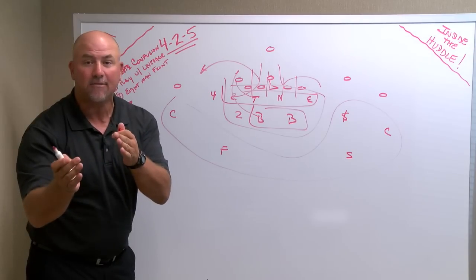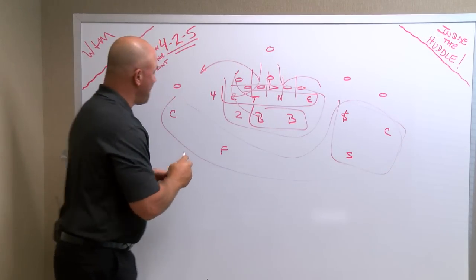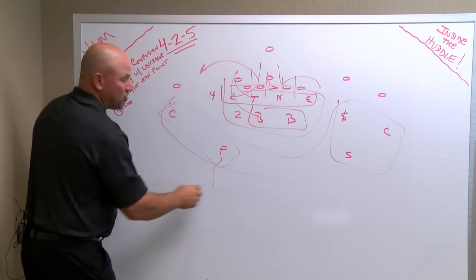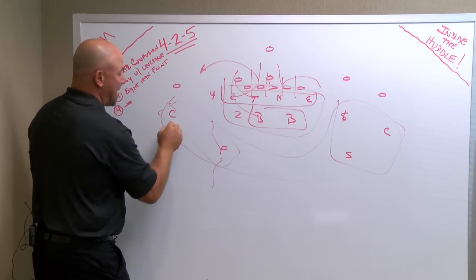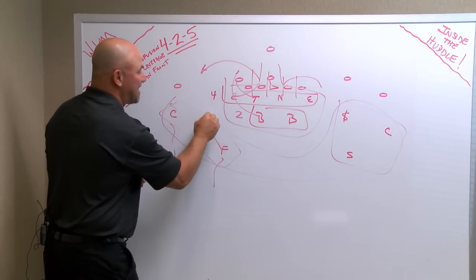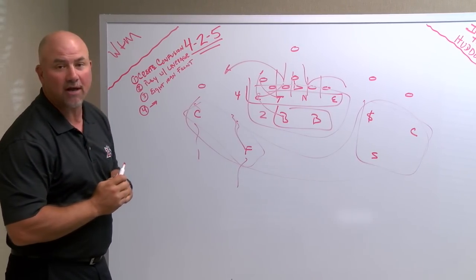And those back five can play independently of each other. These three right here over two. The backside free safety and corner can play two deep coverage. They can play two sky coverage. They can do a lot of different things and you can get that free safety into the box. So you create a lot of confusion up front. You play with a lot of leverage.